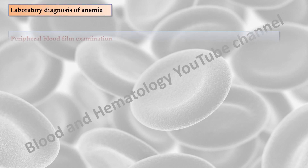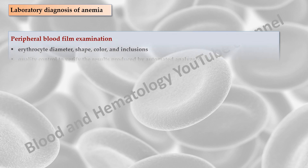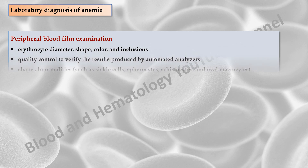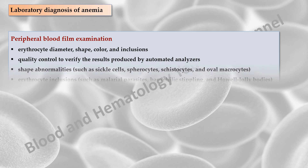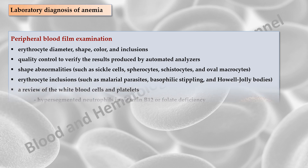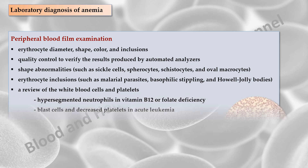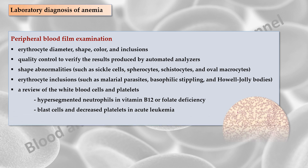An important component in the evaluation of anemia is examination of the peripheral blood film, with particular attention to erythrocyte diameter, shape, color and inclusions. The peripheral blood film also serves as a quality control to verify the results produced by automated analyzers. Certain shape abnormalities of diagnostic value and erythrocyte inclusions can be detected only by studying the erythrocytes on a peripheral blood film. A review of the white blood cells and platelets may help show that a more generalized bone marrow problem is leading to the anemia. For example, hypersegmented neutrophils can be seen in vitamin B12 or folate deficiency, whereas blast cells and decreased platelets may be an indication of acute leukemia.